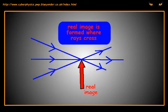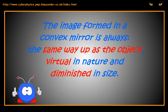They can never cross to form a real image, so the image formed in a convex mirror is always the same way up as the object, virtual in nature, and diminished in size.